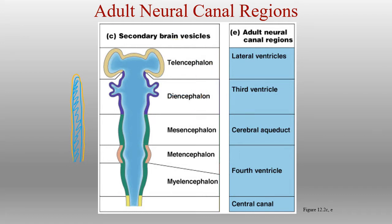The third ventricle develops in between the two sides of the diencephalon, where we have our thalamus, hypothalamus, and epithalamus. The space in between is the third ventricle, which then drains down through the mesencephalon into the fourth ventricle, which lies between the pons primarily and the cerebellum, and a little bit of the medulla oblongata. It finally drains down through the central canal all the way through the spinal cord.